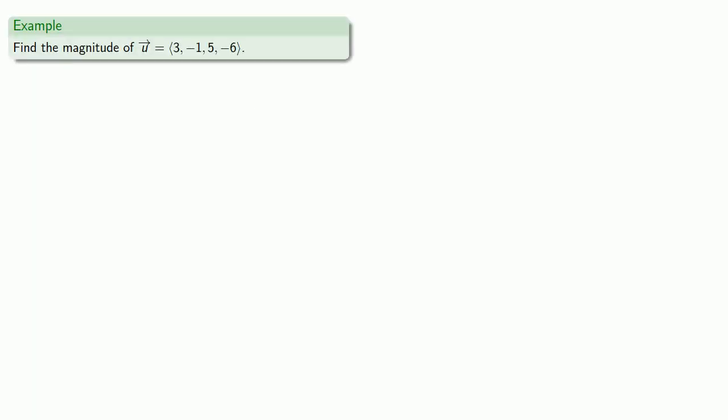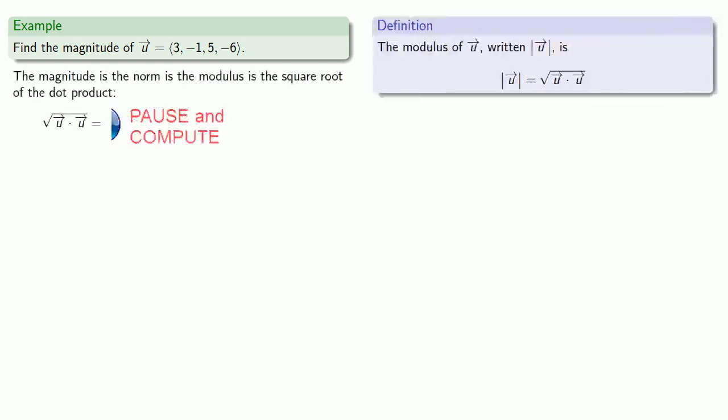And just as a quick example, let's find the magnitude of the given vector. And the magnitude is the norm, is the modulus, is the square root of the dot product. So we'll find the square root of the dot product. And we find then that the magnitude is equal to the square root of 71.